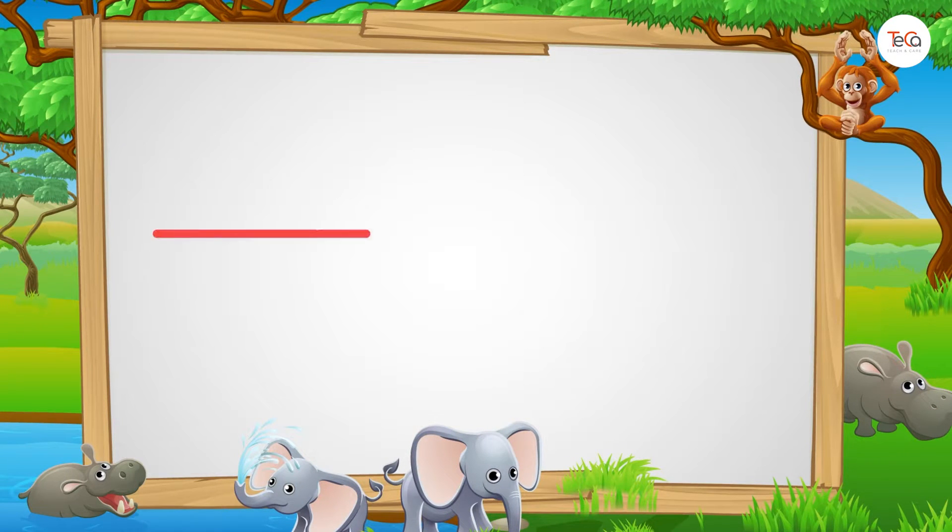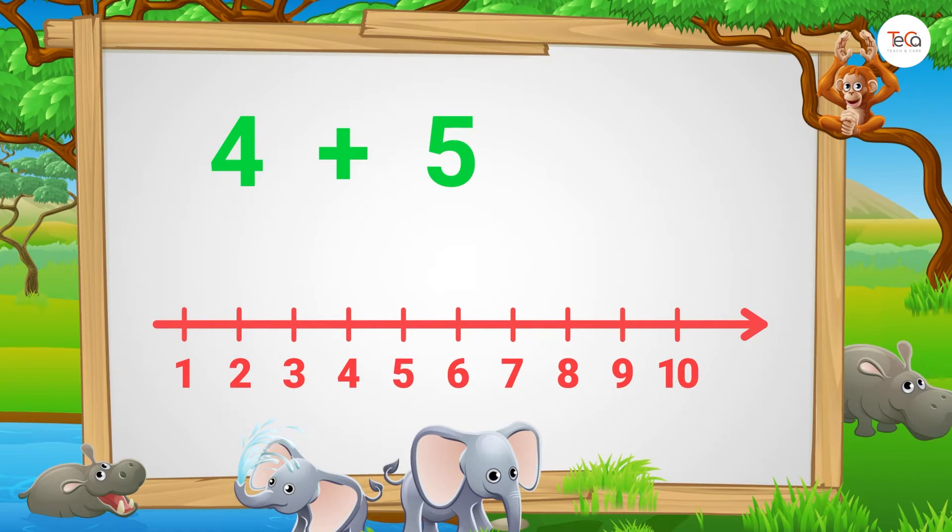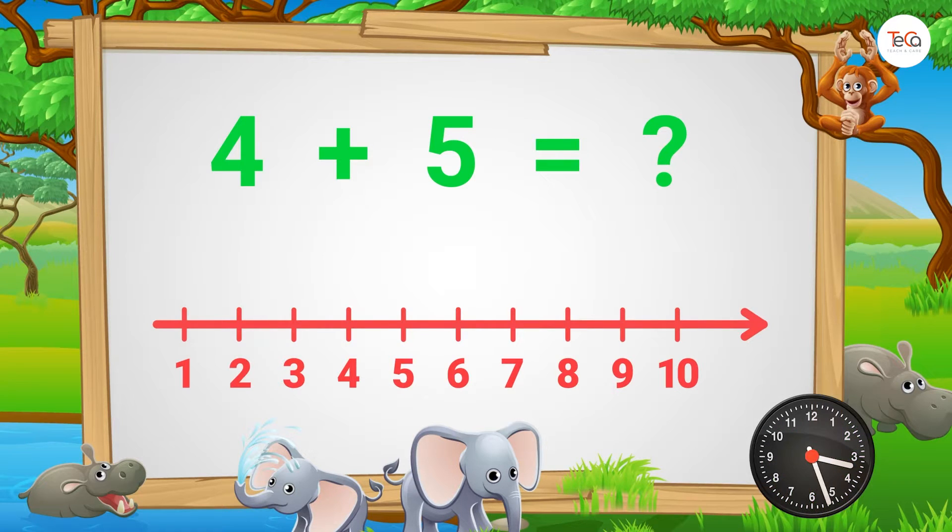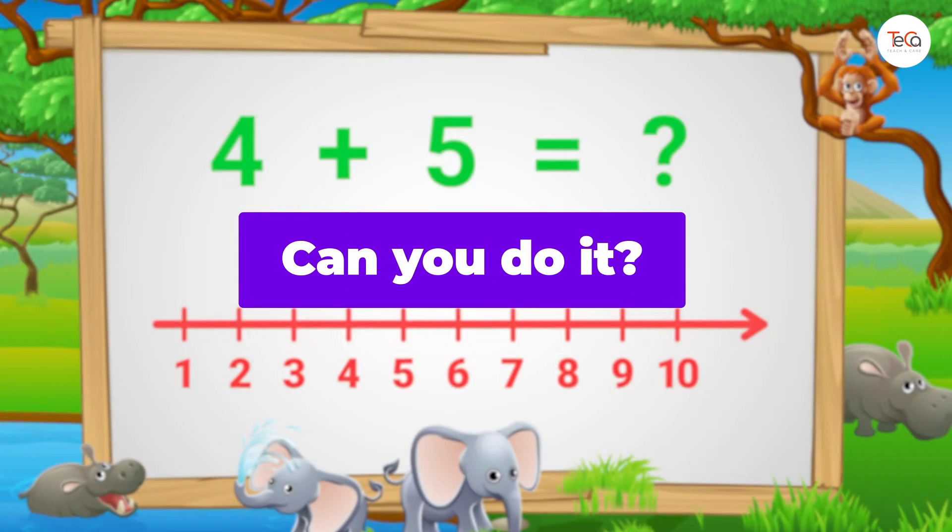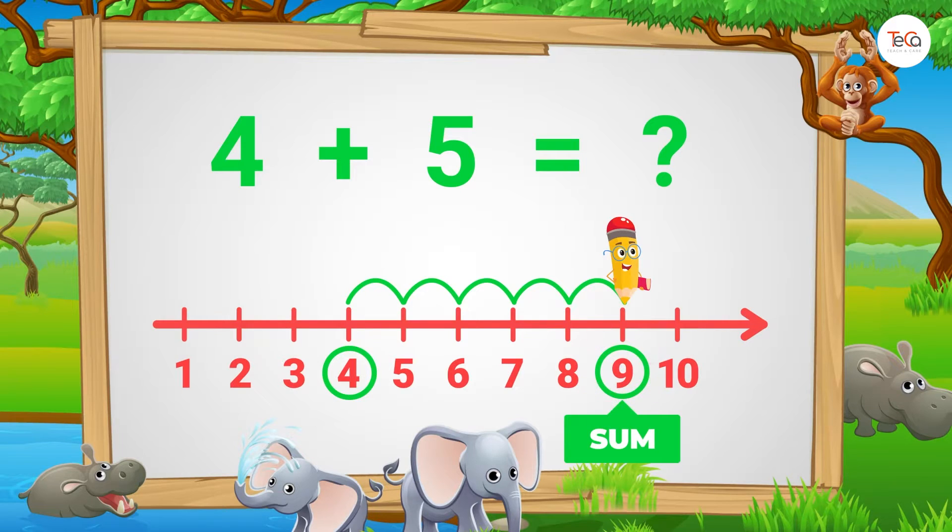Now, use the number line to help me find 4 plus 5. Can you do it? We start from number 4. Then jump five numbers to the right. Then see the number where we stop to find the sum. Here, we stop at number 9. So, 4 plus 5 equals 9.